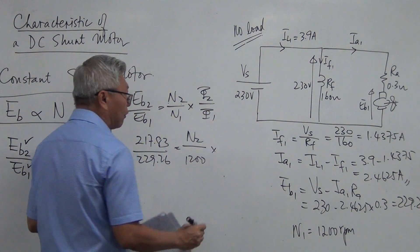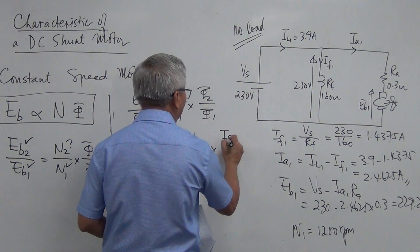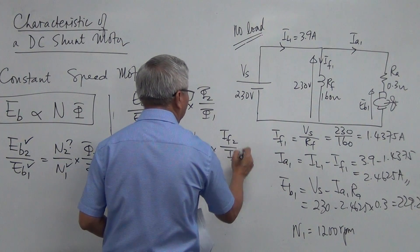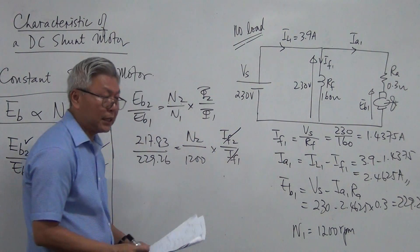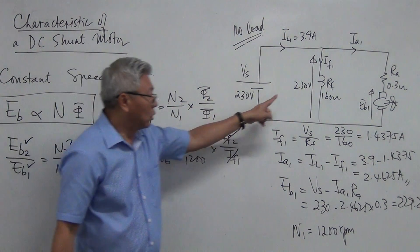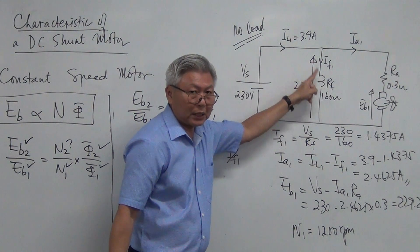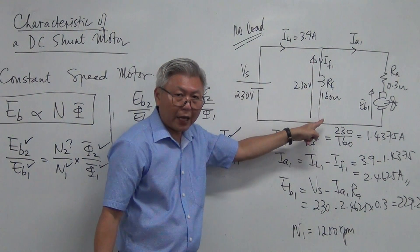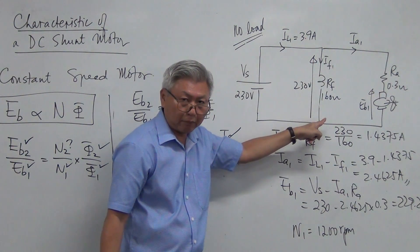And flux 2 and flux 1, I replace it by current. And I know that there's no change. Because it's a parallel circuit, no change in voltage, no change in resistance. IF is the same. If IF is the same, flux is the same.